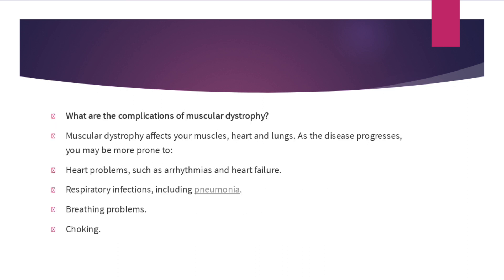Muscular dystrophy can affect your muscles, heart, and lungs. As the disease progresses, you may be prone to heart problems such as arrhythmia and heart failure. People may also develop respiratory infections like pneumonia, breathing problems, and sometimes choking.